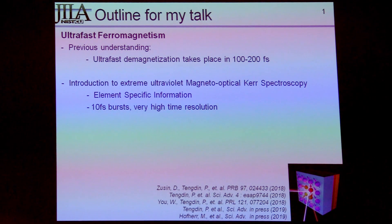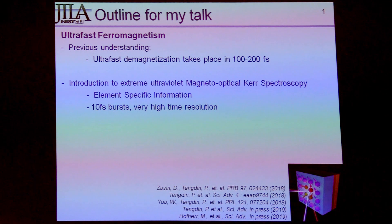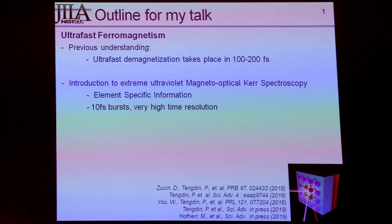This is a very specialized technique that we developed in Colorado. It's an extension of your more traditional MOKE, but done using extreme ultraviolet light that we generate via high harmonic generation, and then use it to probe in a very element-specific way the dynamics of materials, and also in a very fast way in the time domain. These pulses have about 10 femtosecond time duration, so we have extremely high time resolution. We can look at really what are the dynamics — not even just the magnetic dynamics, but we can also look at what the electrons are really doing.